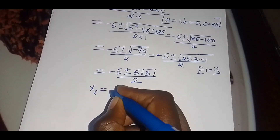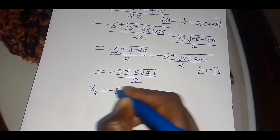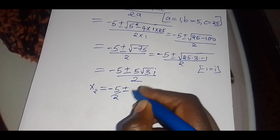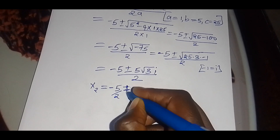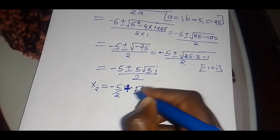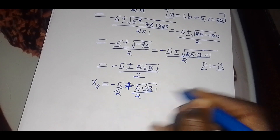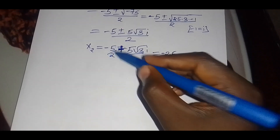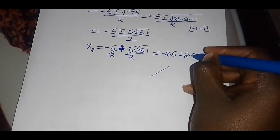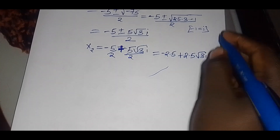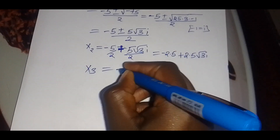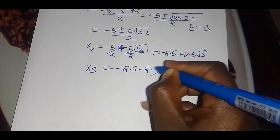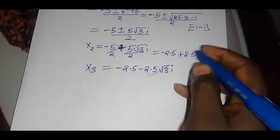So the second and third values of x are: x₂ equals negative 5 divided by 2 plus 5 times square root of 3 times i divided by 2, which is negative 2.5 plus 2.5√3·i; and x₃ equals negative 2.5 minus 2.5√3·i.